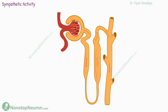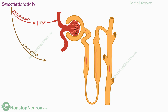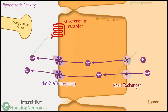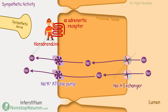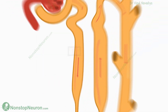Now the effect of sympathetic activity. It reduces sodium excretion by hemodynamic as well as direct effect. The hemodynamic effect is a reduction in renal blood flow, which reduces GFR and therefore sodium load. The direct effect is seen in the proximal tubule, where activation of the alpha-adrenergic receptor stimulates the apical sodium-hydrogen exchanger and basolateral sodium-potassium ATPase pump, so reabsorption increases.